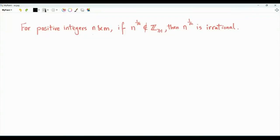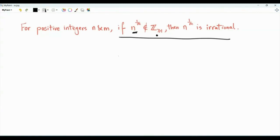Bismillah ar-Rahman ar-Rahim. We have two positive integers, n and m. We want to prove this result: that if n to the power 1 over m — that's the nth root of n — if this is not an integer, then it is an irrational number. We want to show that if m is not a perfect nth power, then it is not a rational number. It must be irrational.